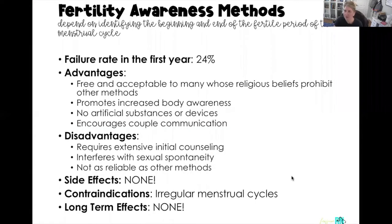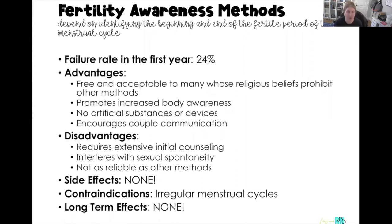Natural family planning or fertility awareness methods depend on the woman being able to identify the beginning and the end of the fertile period of the menstrual cycle. We're going to talk through the different ways that women determine the beginning and the end of that fertile period.